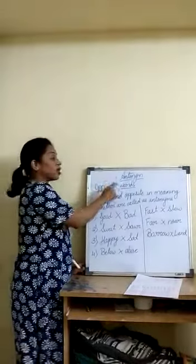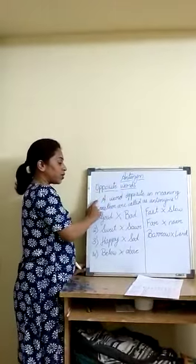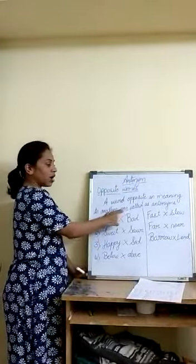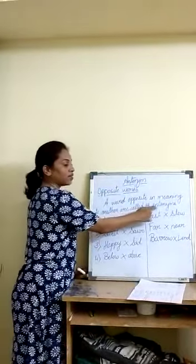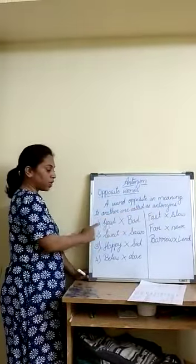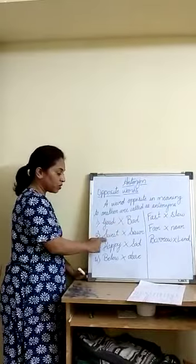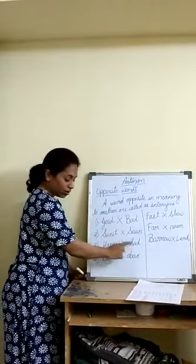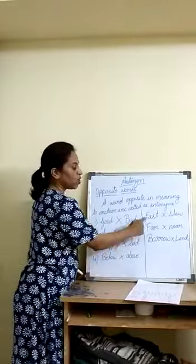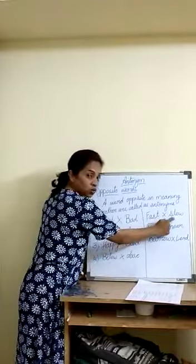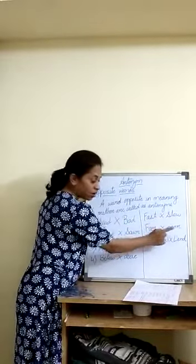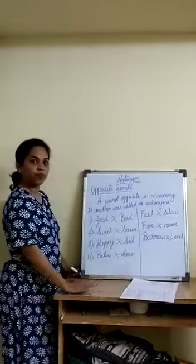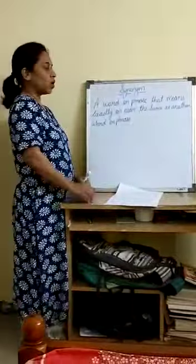The definition of antonym is: a word opposite in meaning to another word is called an antonym. For example: good — bad, sweet — sour, happy — sad, below — above, fast — slow, far — near, borrow — lend.